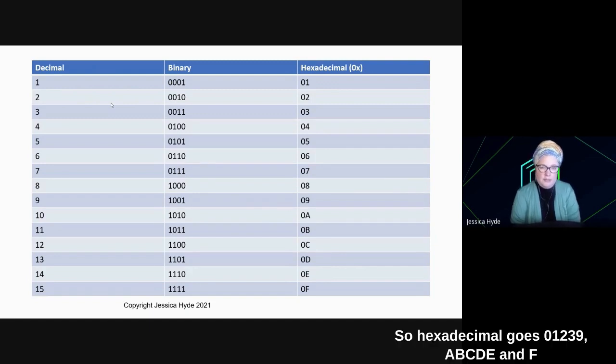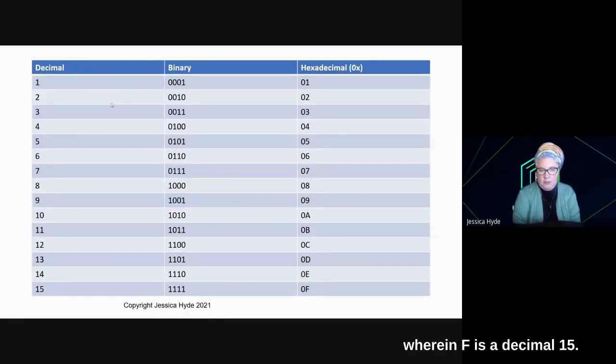Hexadecimal is actually 16 and goes from 0 to F. So hexadecimal goes 0, 1, 2, 3, dot dot dot, 9, A, B, C, D, E, and F, where an F is a decimal 15.